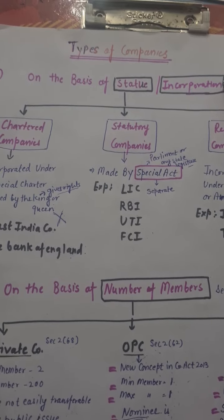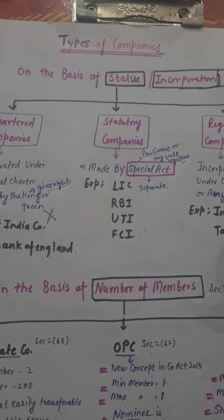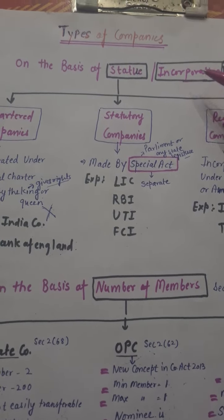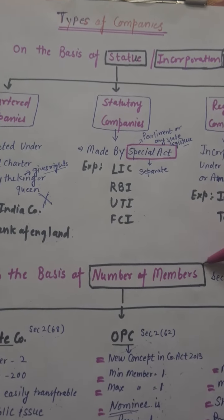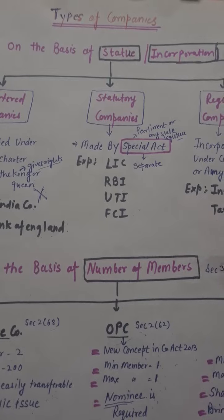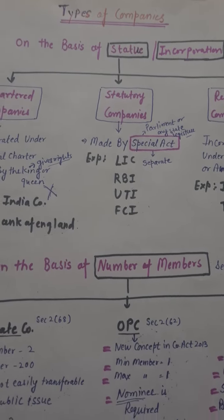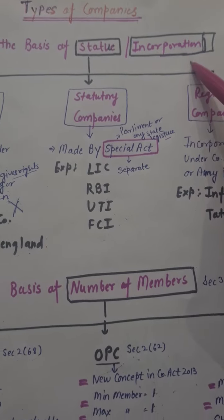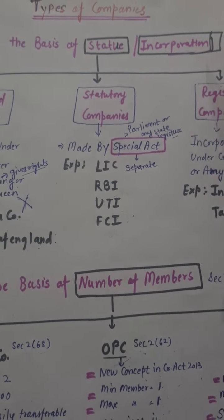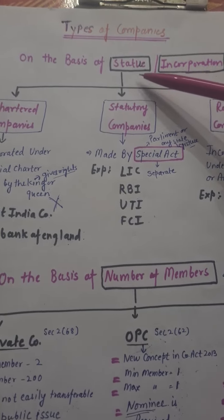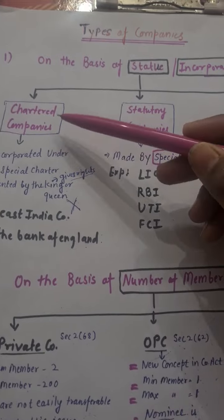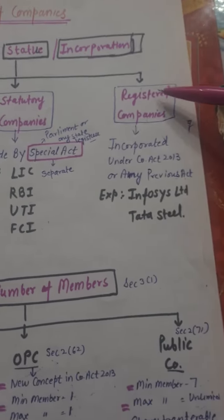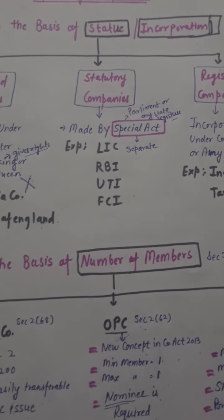What are the types of companies? Today we will discuss on the basis of strategy, on the basis of number of members or ownership, or on the basis of liability. On the basis of strategy or incorporation, our first company is chartered company, second one is statutory company, and third one is registered companies.